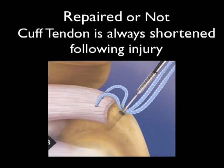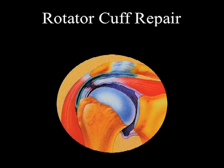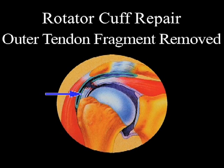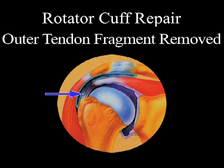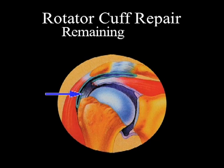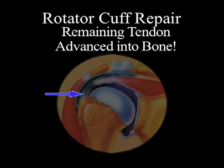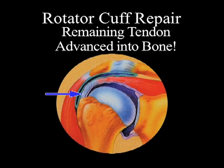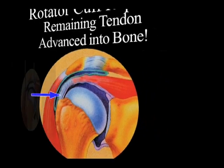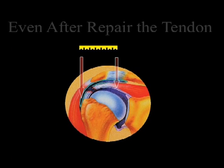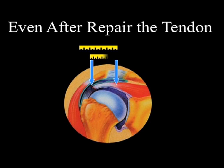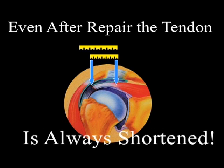Importantly, whenever a rotator cuff tendon is torn, the end result will be a shortened tendon. This is true whether the cuff is repaired or treated conservatively. In the first step of a cuff repair, the outer remaining fragment of tendon must first be removed. In the second step, the remaining tendon with its muscle attachment must be advanced laterally into bone. Though repair saves the rotator cuff from further injury, surgical repair still results in some degree of tendon shortening.